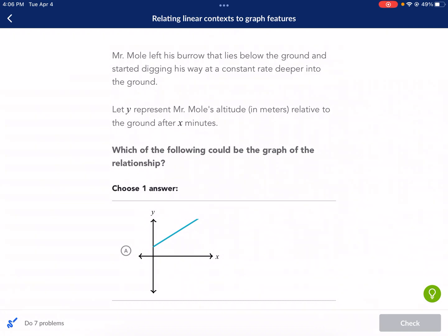Hi, this is Mr. West, and today we're doing a Khan Academy tutorial on relating linear context to graph features. We'll need to coordinate which of the scenarios matches up with the graphs based on what we know about linear equations.